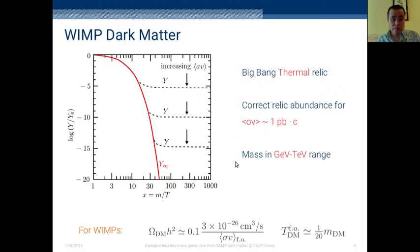In order to explain the relic abundance that we estimate from observation, the interaction strength has to be of the order of the electroweak scale, around one picobarn times the speed of light. The mass range for these particles has to be of the order of the GeV-TeV range. More specifically, to reproduce the relic abundance, the annihilation cross-section at the time of freeze-out has to be 3 times 10^-26 cm^3 per second, and the temperature at which dark matter decouples is usually 1/20th of the mass of the particle.